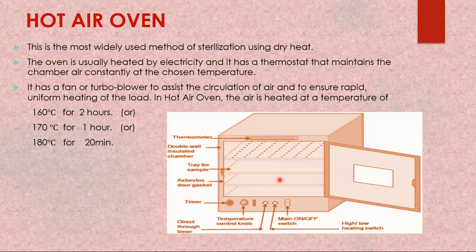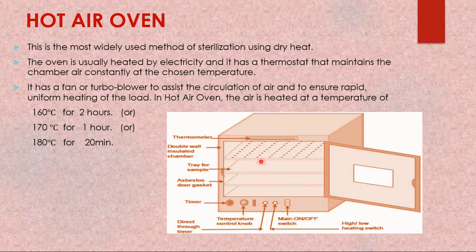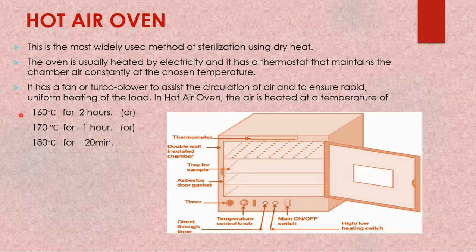Once articles are placed inside and the door is closed, you control the temperature. The sterilization temperatures for a hot air oven are: 160°C for 2 hours, 170°C for 1 hour, or 180°C for 20 minutes. The electricity heats the elements, generating heat that warms the air, and the fan circulates it around all the articles.